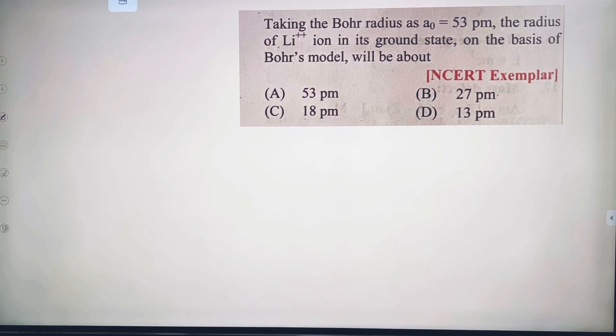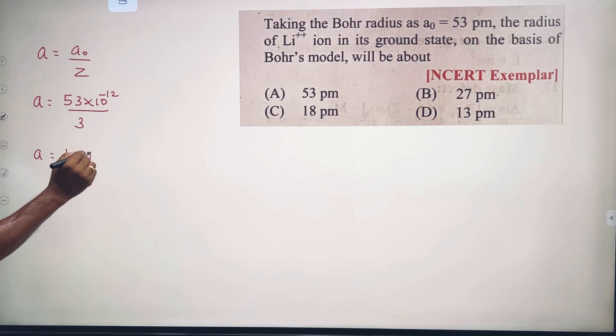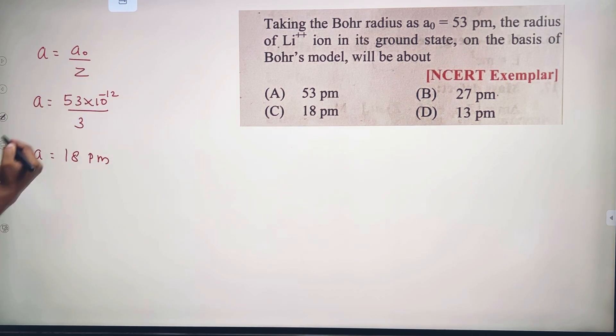Next: The Bohr radius a₀ equals 53 picometers. The radius of lithium ion in its ground state using the Bohr model - the formula is r equals r₀ times n squared divided by atomic number Z. For lithium, atomic number is 3, n is 1 for ground state. So r equals 53 picometers divided by 3, which equals 18 picometers.